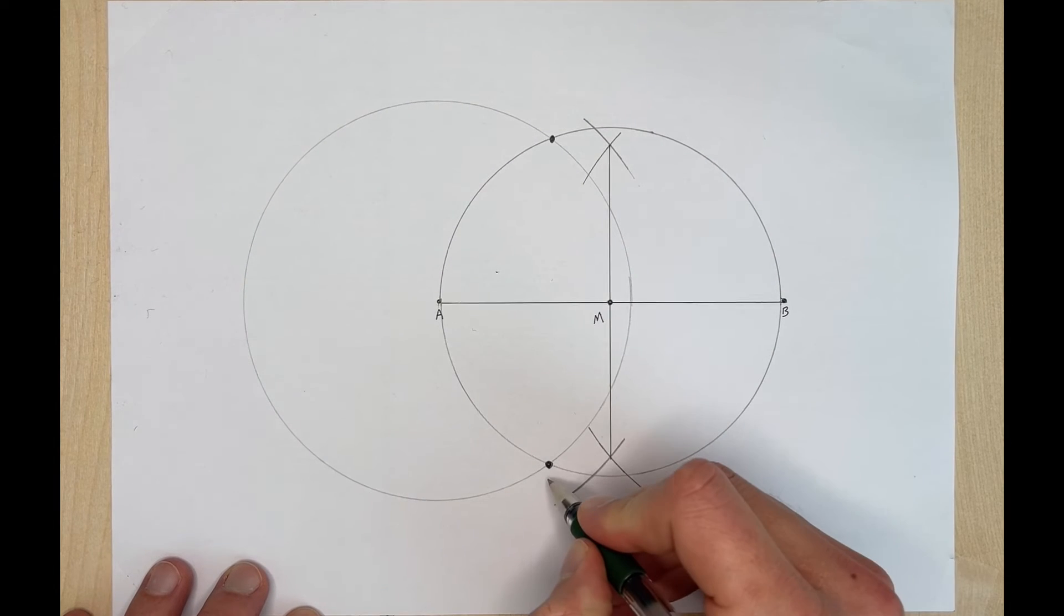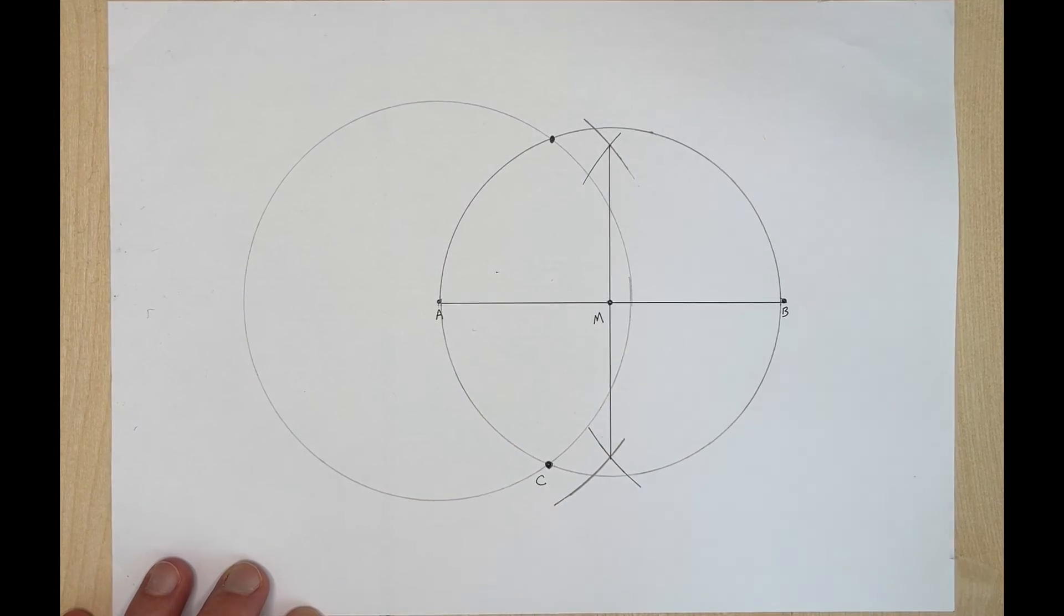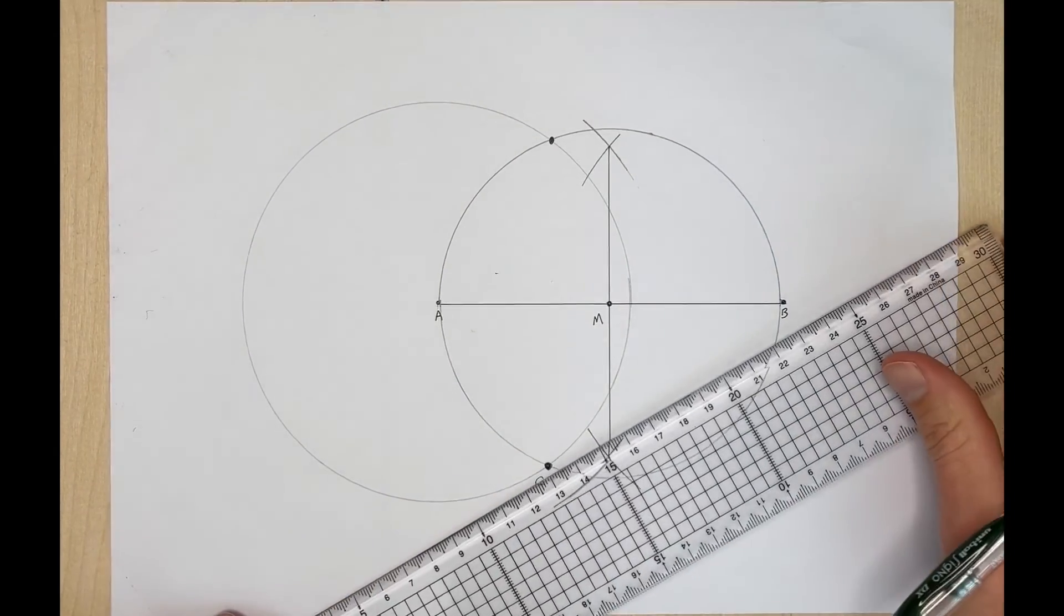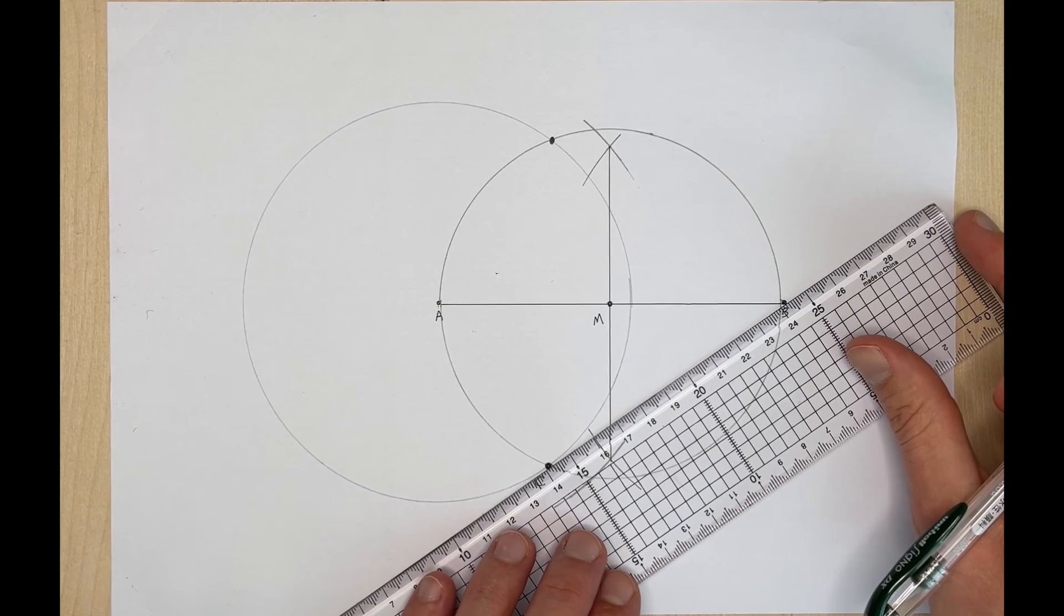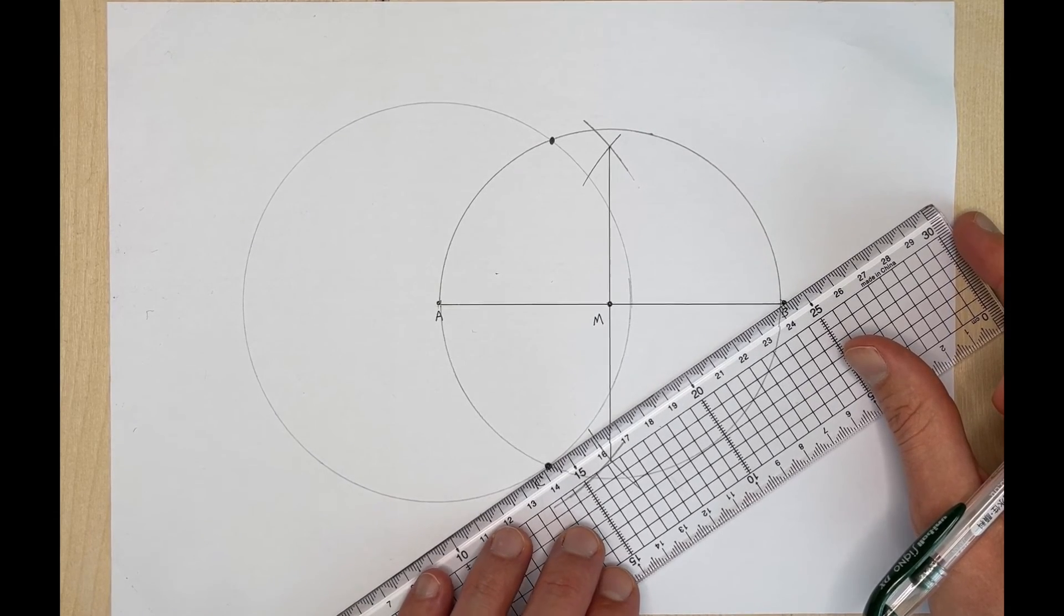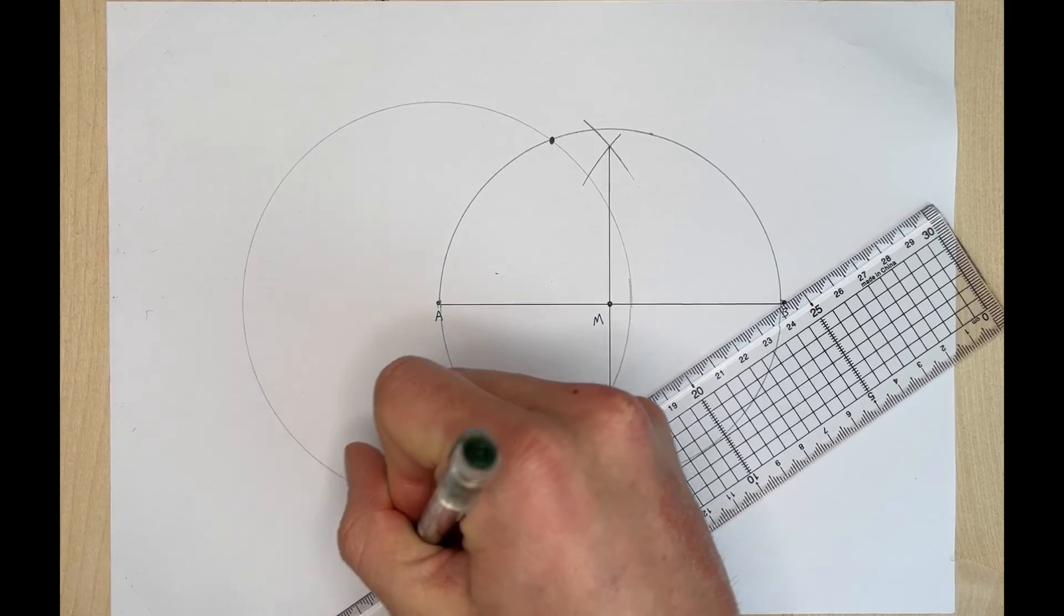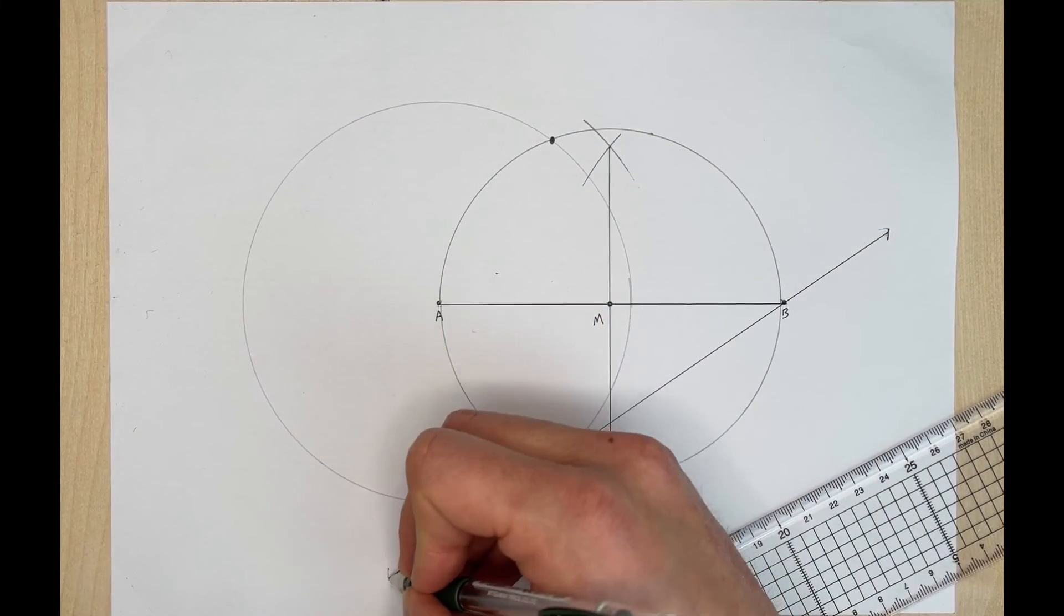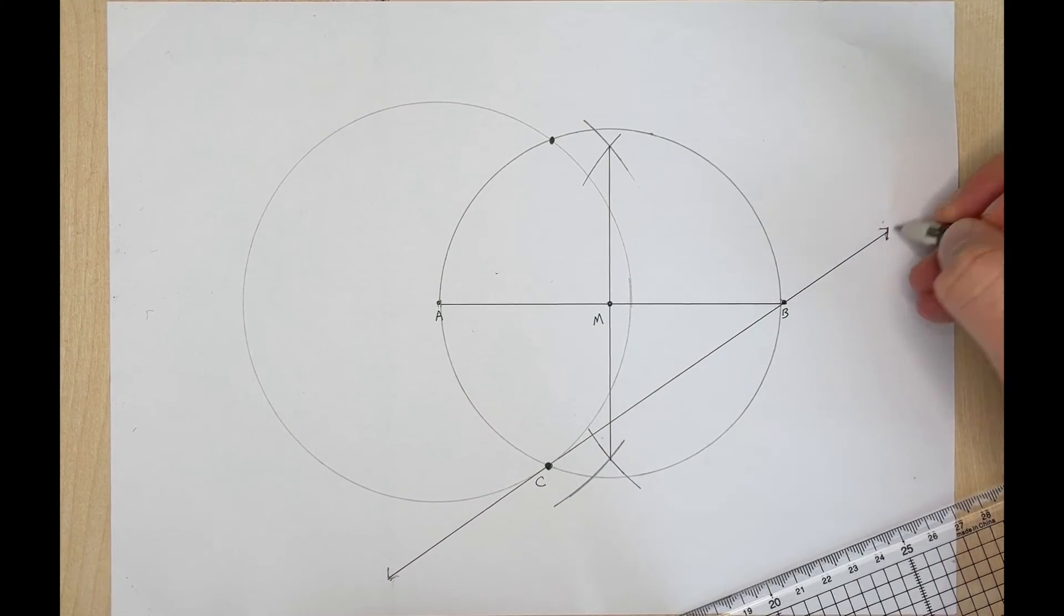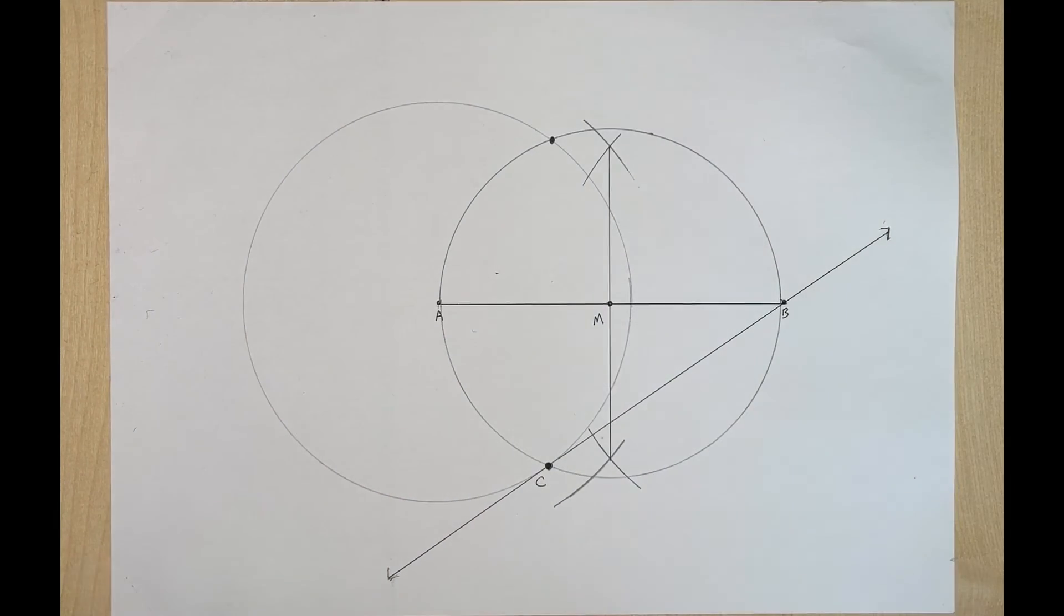So we have point A, B, we'll call this point C and now we can draw our tangent line through points B and C. Okay so we'll get that lined up and now we'll draw our tangent line. I'll put arrows on the end and now we have constructed our line tangent to a circle.